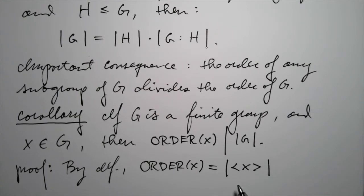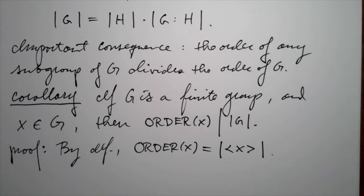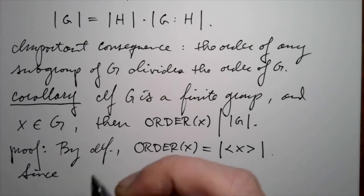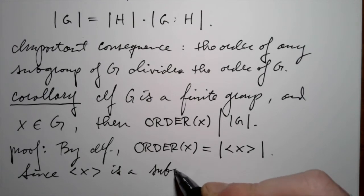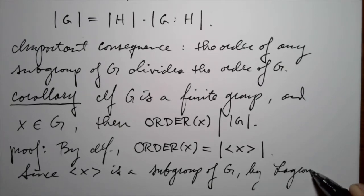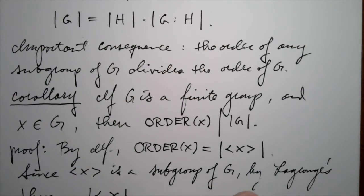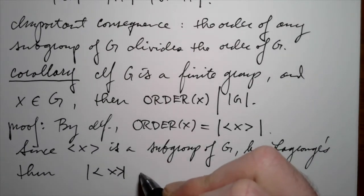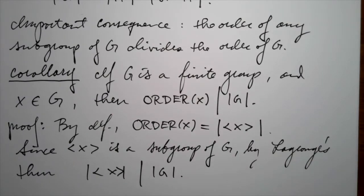If we look at all the powers of X — X to the first power, X squared, X cubed, and so on — the order of X is precisely the number of elements in G generated by such powers of X, including the identity element. In a finite group, some power of X will give us the identity. Since that cyclic subgroup is a subgroup, we can apply Lagrange's theorem to it. Its size divides the size of G — I write this vertical bar for 'divides.' And so the order of any element divides the order of the group.